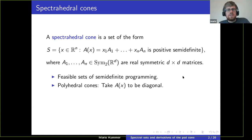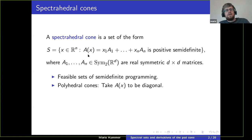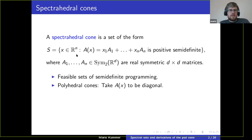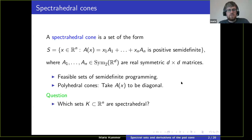This is a generalization of polyhedral cones, because we can take A(x) — or all the A_i's to be diagonal matrices — and then this is just the solution set to finitely many linear inequalities.